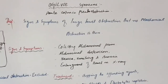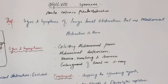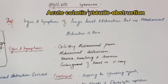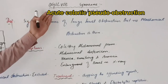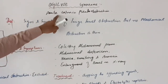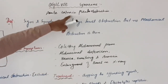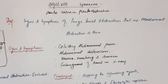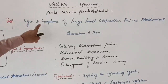In this video I am going to talk about Ogilvie syndrome, which is also known as acute colonic pseudo-obstruction. It is acute and it is a colonic pseudo-obstruction. Pseudo-obstruction means that there is no actual mechanical obstruction — there is actually a functional obstruction of the colon.